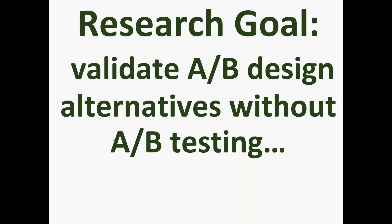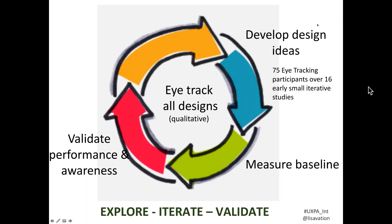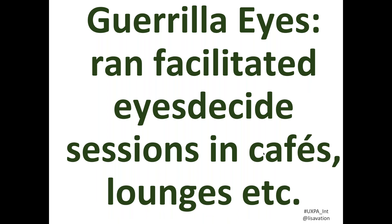Here's one final example, almost worth a whole other talk. The research goal was to validate an A/B design alternative without any A/B testing capability on the website, and there was still a lot of design work to do. We ran about 75 eye tracking participants on the EyesDecide system over 16 small iterative studies, then measured the baseline and validated performance in an online study. We had a cycle of iterating with eye tracking and then validating with a larger online study.